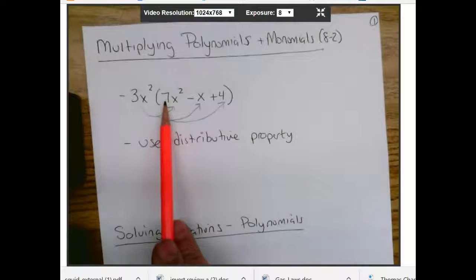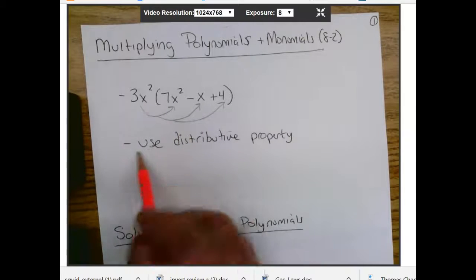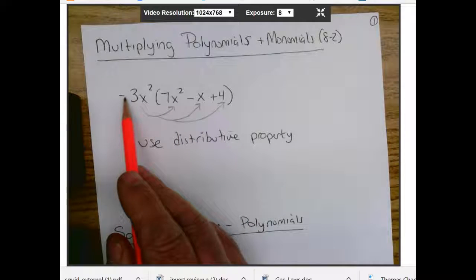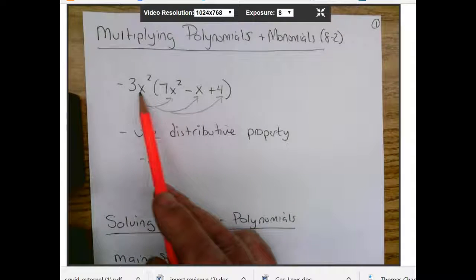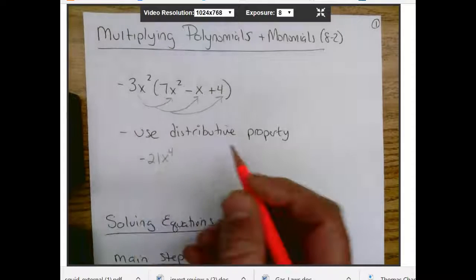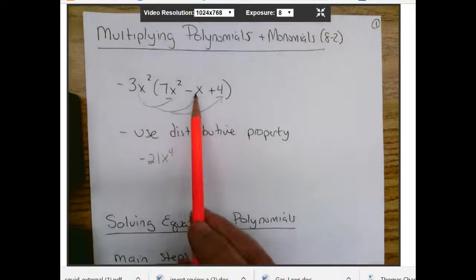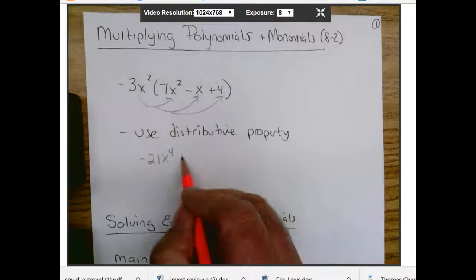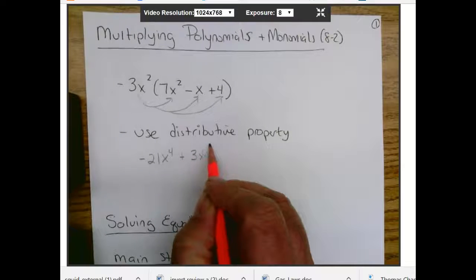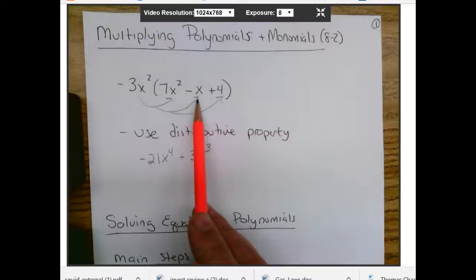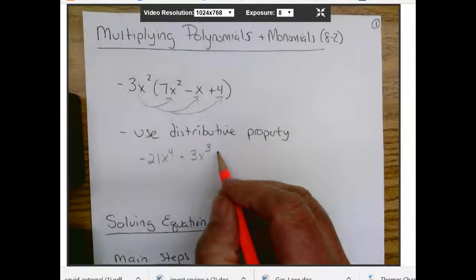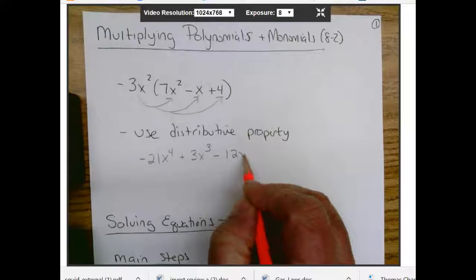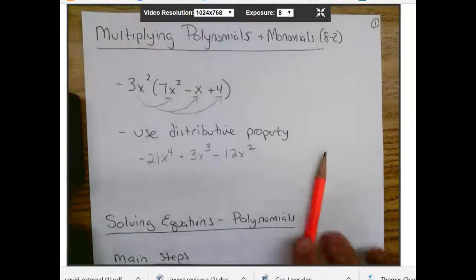So 3x squared times 7x squared. So we got, it's a negative, right? So of course this is a number, negative 21. And then we're going to have, and it's more multiplying. We just add exponents, so x to the 4th. Then we do the next one, negative 3x times a negative x. So that's going to be a positive 3x to the 3rd. The second one, do the last one. So 4 times negative 3x squared. That's going to be negative 12x squared. And that's kind of the answer for that one.